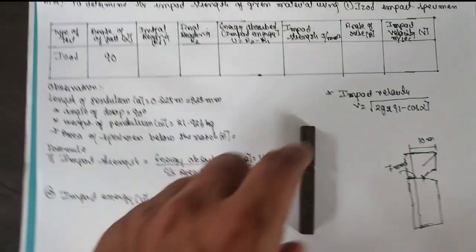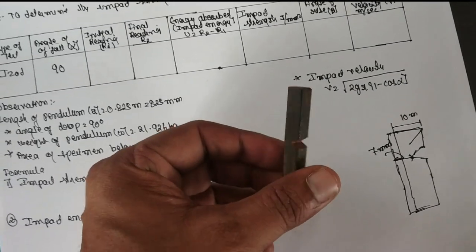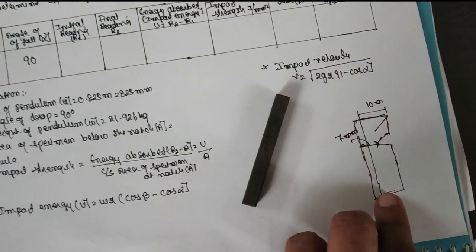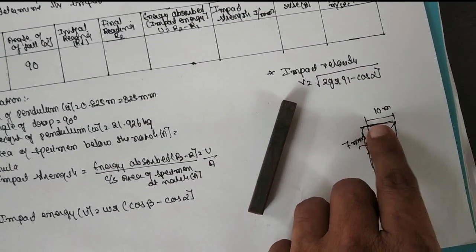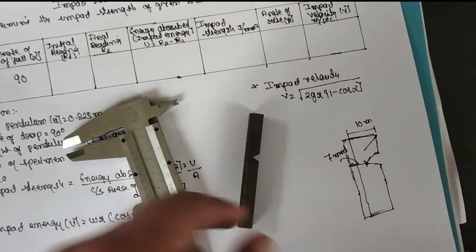Area of the specimen we have to find out. This is the specimen. We call it the IZOD test specimen. The diagram is drawn here. How to find out the area? This is the area, 10. With the help of the Vernier scale, you have to find out.